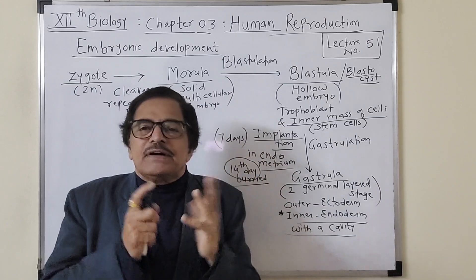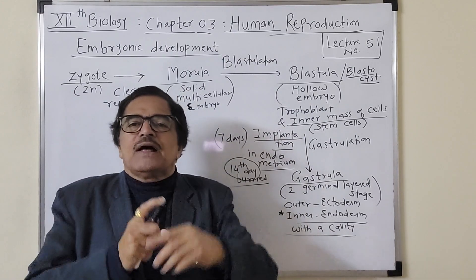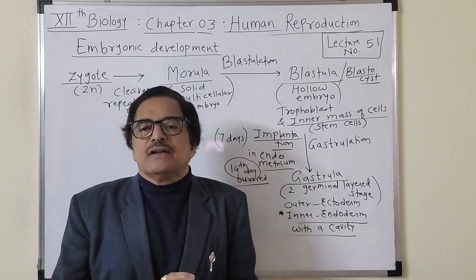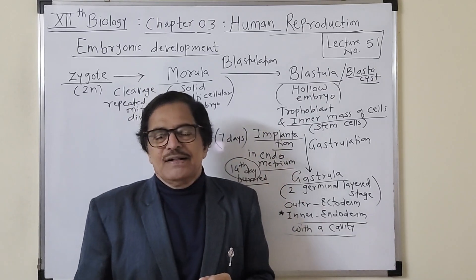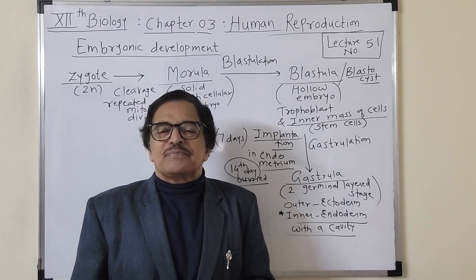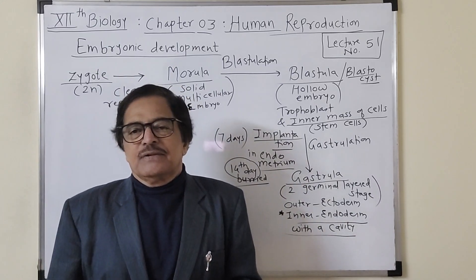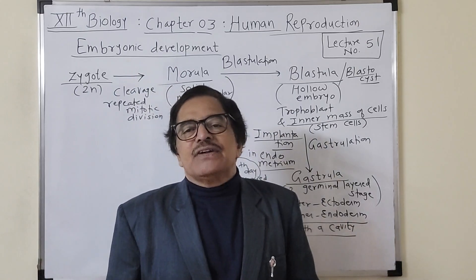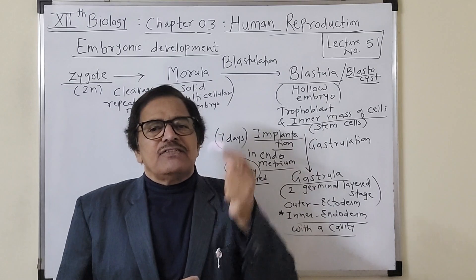The gastrula embryo is a two-germinal-layer stage. The outer layer is the trophoblast for nourishing, and the inner mass of cells — called stem cells — has tremendous potential to develop into cells, tissues, and organs of any type. The inner mass of cells starts to organize into definite layers: the first formed layer is the endoderm, enclosing a cavity known as the enteron or archenteron, and then the outer layer — the ectoderm — develops later. So a double-layered embryonic disc is formed, and this type of embryo is called the gastrula.